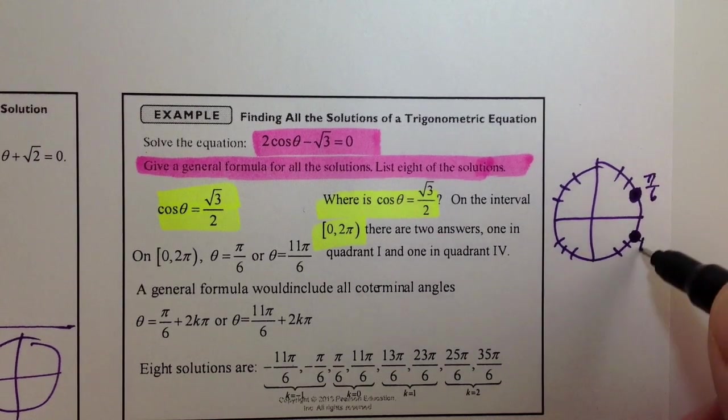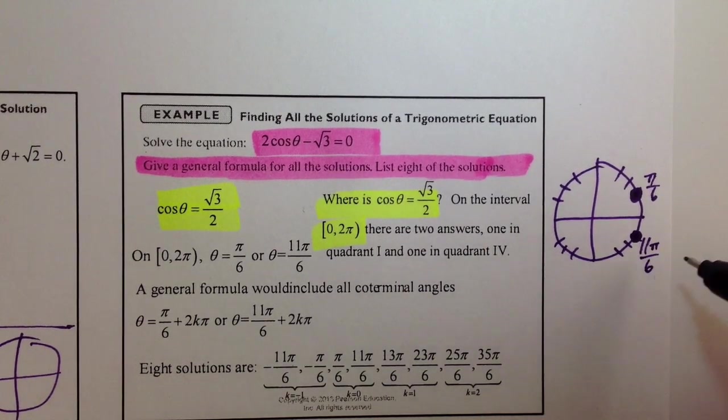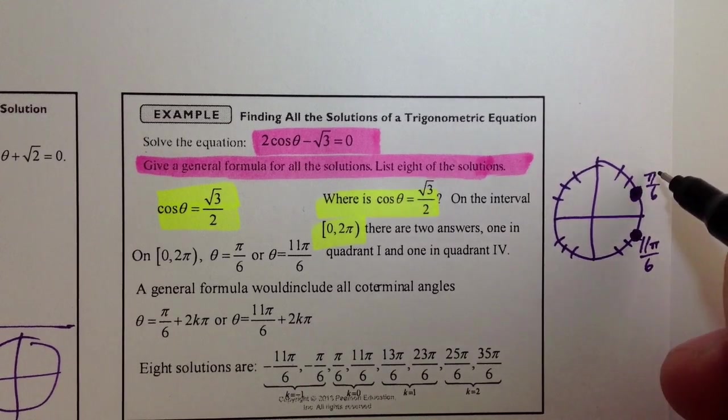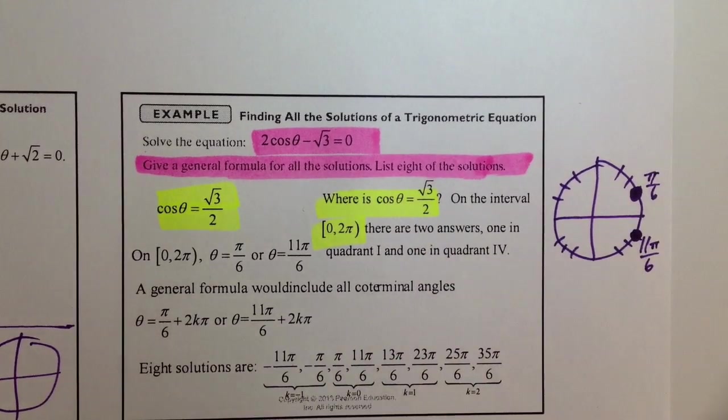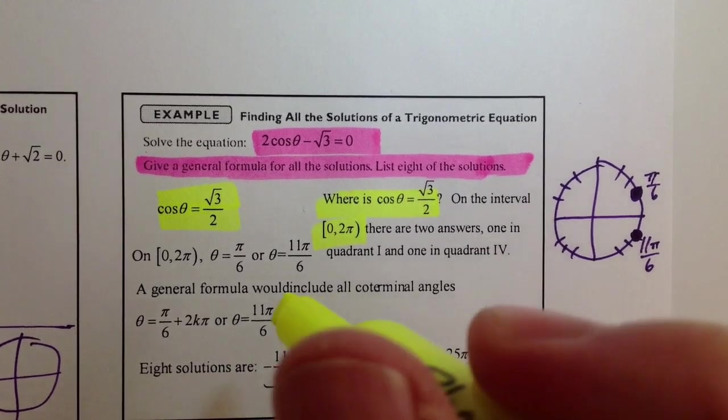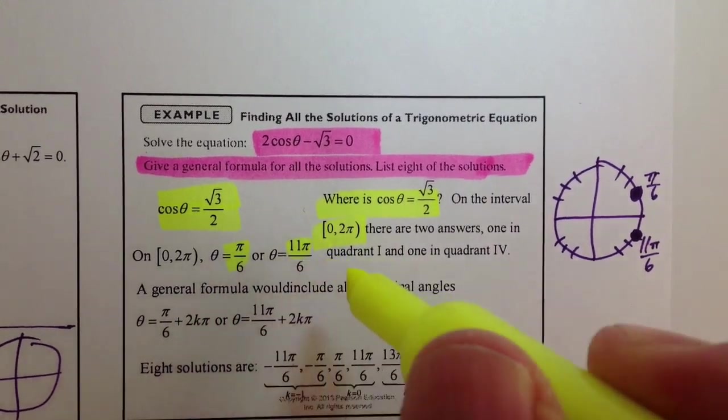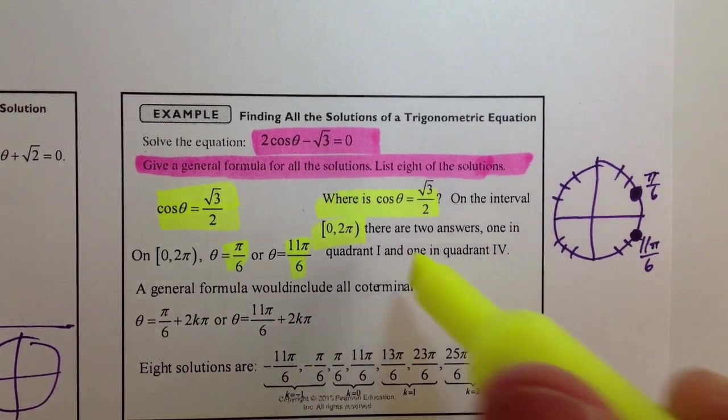So right here and right here is where the cosine is radical 3 over 2. So this is the pi over 6, and this is the 11 pi over 6. So the cosine of both of these angles is equal to radical 3 over 2. So theta, then, would be equal to pi over 6 and 11 pi over 6. Quadrant 1 and quadrant 4.